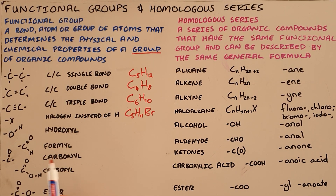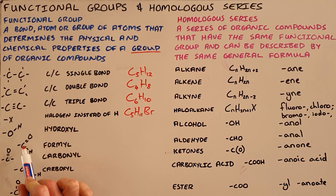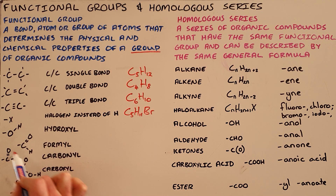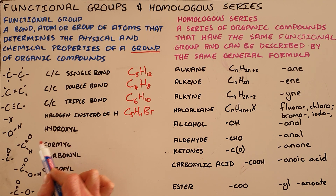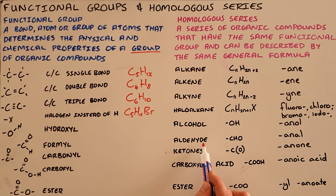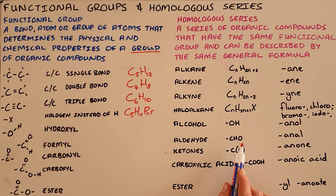Next, we have what is known as the formyl functional group, which is a carbon double bonded to an oxygen and single bonded to a hydrogen. Any compound that contains this formyl functional group belongs to the aldehyde homologous series, and therefore gets the suffix -anal. It is represented as CHO in condensed structural formula.